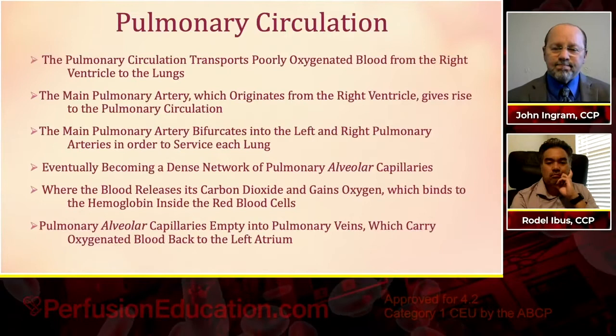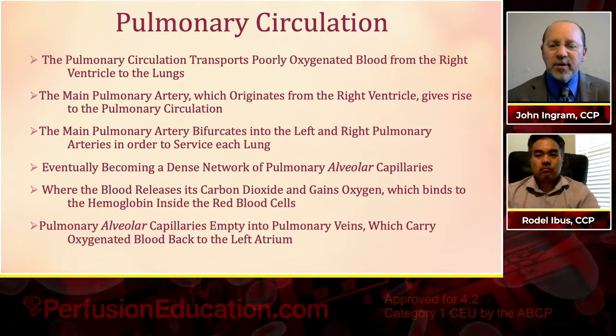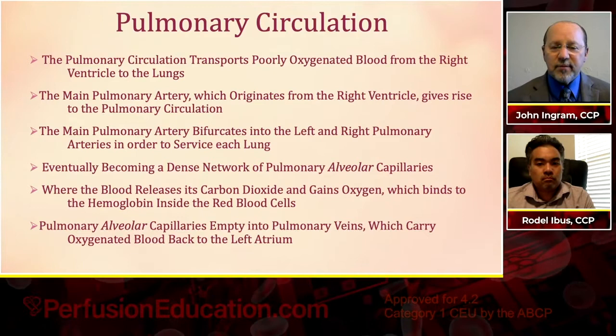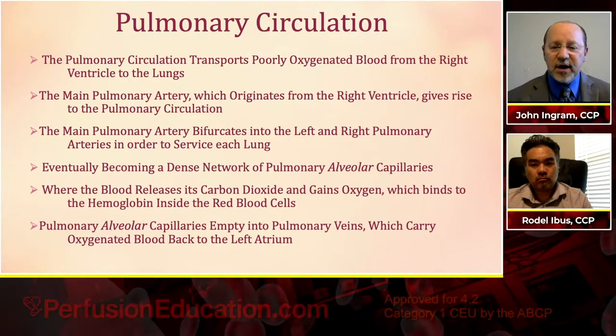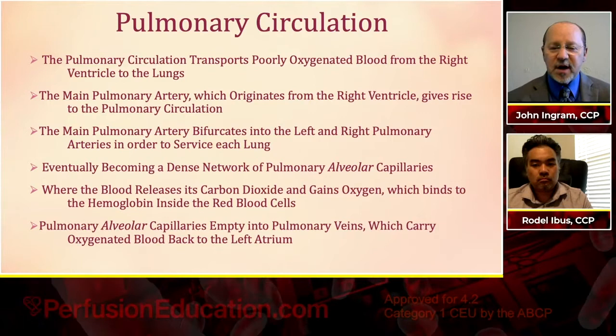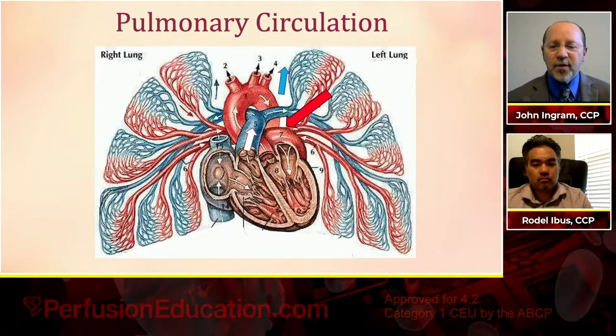Let's start with pulmonary circulation. The pulmonary circulation transports poorly oxygenated blood from the right ventricle to the lungs. The main pulmonary artery, originating from the right ventricle, bifurcates into left and right pulmonary arteries to service each lung. Eventually it becomes a dense network of pulmonary alveolar capillaries, where blood releases carbon dioxide and gains oxygen binding to hemoglobin inside red cells. Pulmonary alveolar capillaries empty into pulmonary veins, which carry oxygenated blood back to the left atrium.